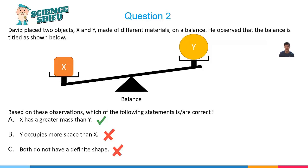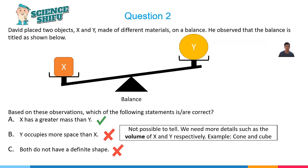So you may be thinking, why is sentence B wrong? Well, the reason is it is not possible to tell. We need more details such as the volume of X and Y respectively.